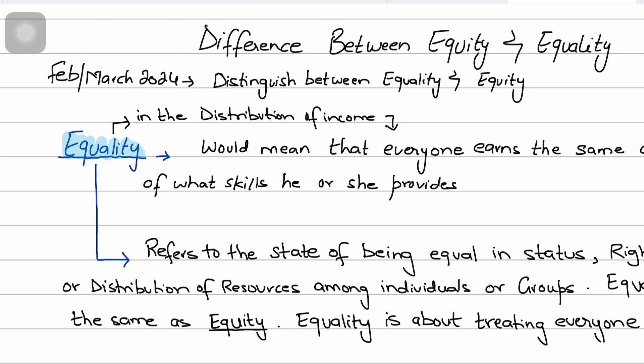The principle of equality advocates for treating all individuals or groups in the same manner, regardless of their differences in circumstances. The concept of equality ignores differences in circumstances, needs, and abilities. For example, imagine I'm teaching a class with three students — one is very smart and understands concepts quickly, while the other two are comparatively less smart.